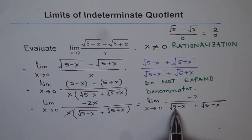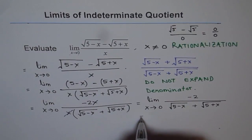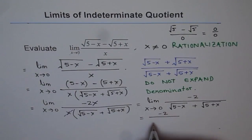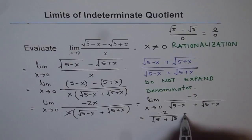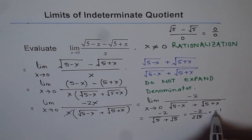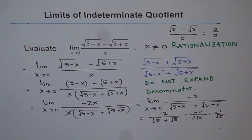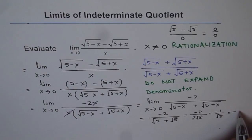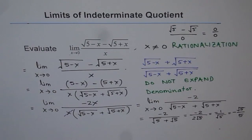Now we can substitute x equals 0 and get the answer. We get minus 2 over square root of 5 plus square root of 5, which gives minus 2 over 2 square root of 5, which simplifies to minus 1 over square root of 5. It is better to rationalize the denominator and write this as minus square root of 5 over 5. Both forms are correct, though most prefer the rationalized form.